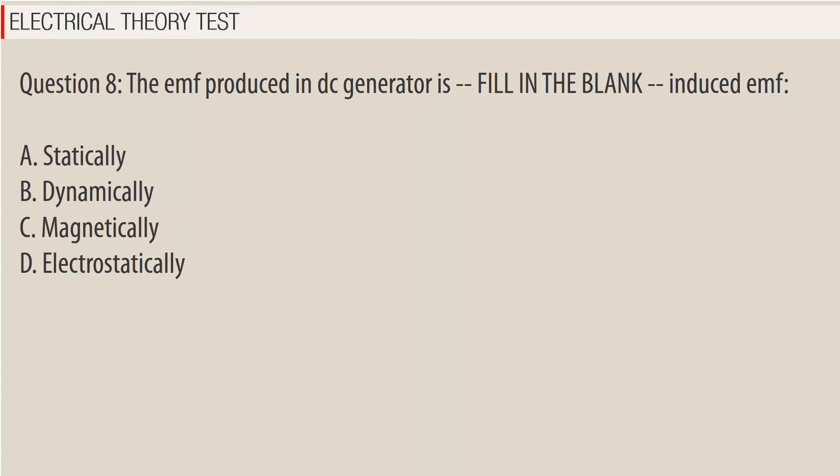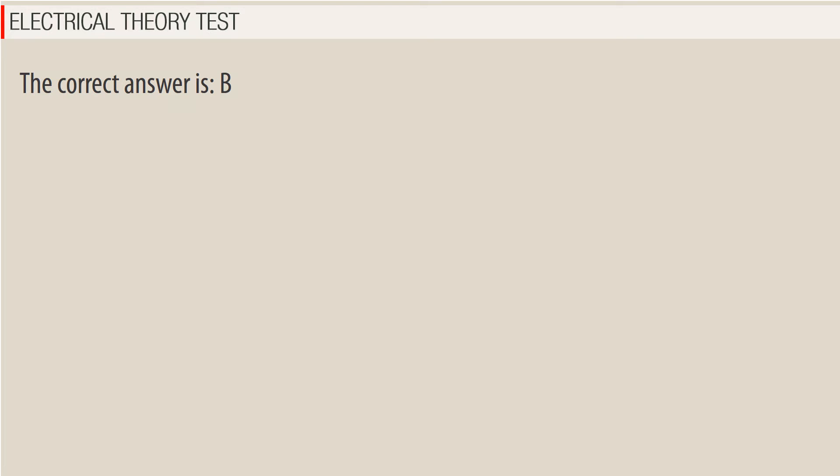Question 8: The EMF produced in a DC generator is — fill in the blank — induced EMF. A. Statically, B. Dynamically, C. Magnetically, D. Electrostatically. The correct answer is B.